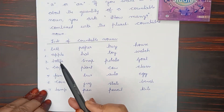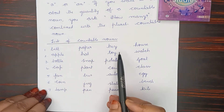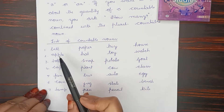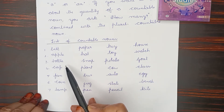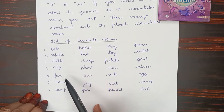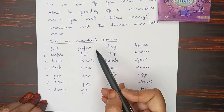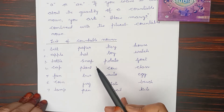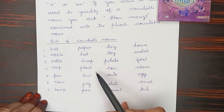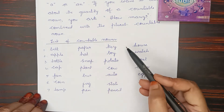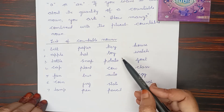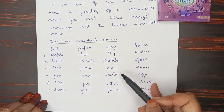Here is a list of some countable nouns: Belt, Apple, Bottle, Cap, Fan, Coin, Lamp, Paper, Hat, Snap, Plant, Bus, Jug, Pen, Key, Toy, Potato.